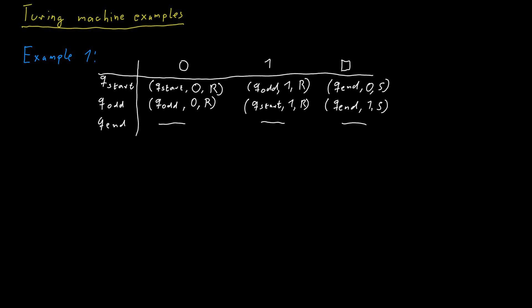This Turing machine does something very simple. It returns 1 if the input contains an odd number of ones and returns 0 otherwise.